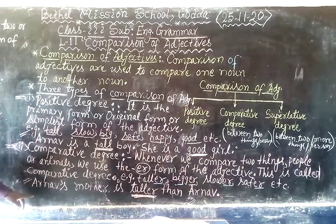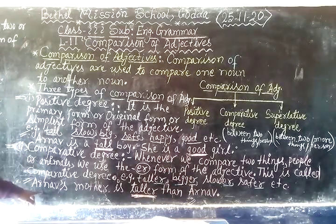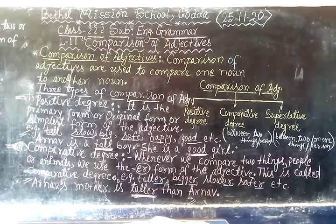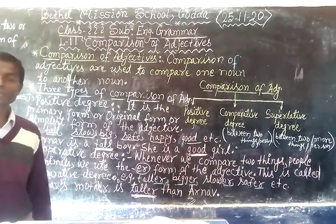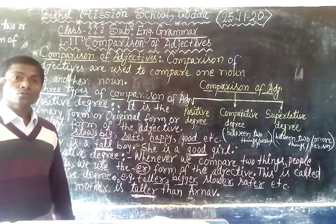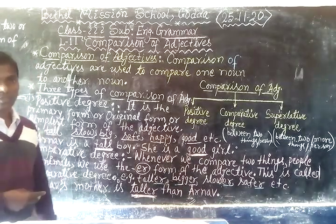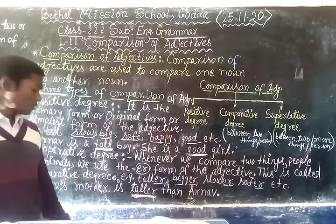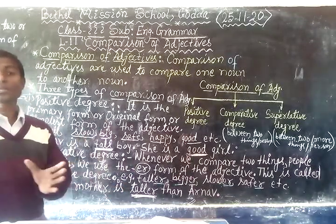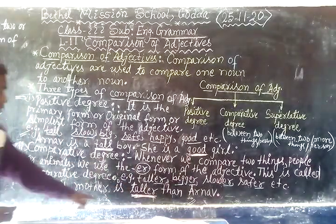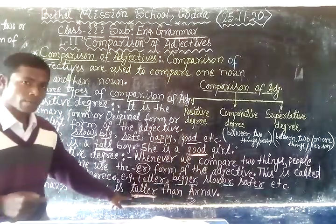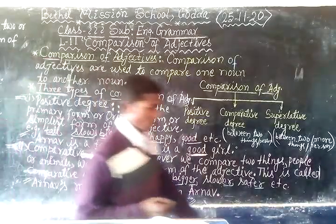Let us see a comparative degree sentence. 'Anna's mother is taller than Anna.' Here there are two persons — Anna's mother and Anna — and we are comparing between them. So 'taller' is the comparative degree adjective used here. In comparative degree we always compare between two things or two persons.